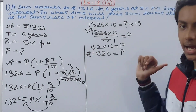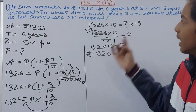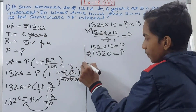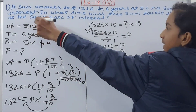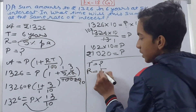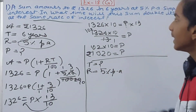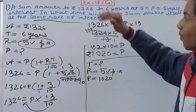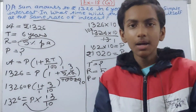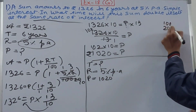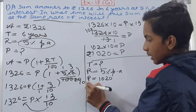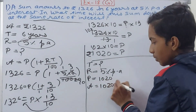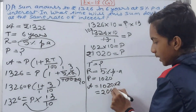Now for the second part: in what time will this sum double itself at the same rate of interest? Here we have to find the time. The rate remains five percent per annum. The principal is 1020. Double itself means multiplied by 2, so if the principal is 1020, the amount becomes 1020 × 2 = 2040. So the amount is rupees 2040.